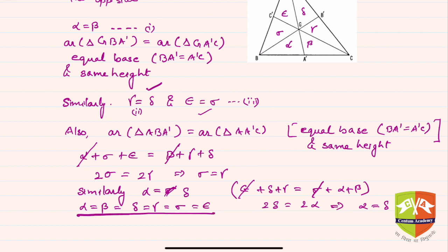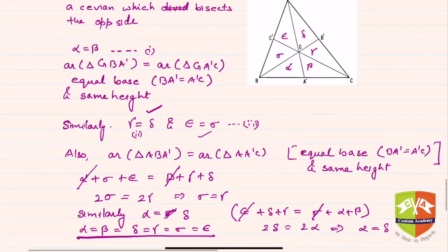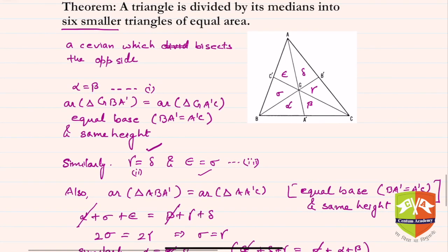So we conclude that the three medians together divide the triangle into six parts of equal area. The same logic can be used to establish that the medians divide themselves in a two-to-one ratio, which we will prove in the next session.